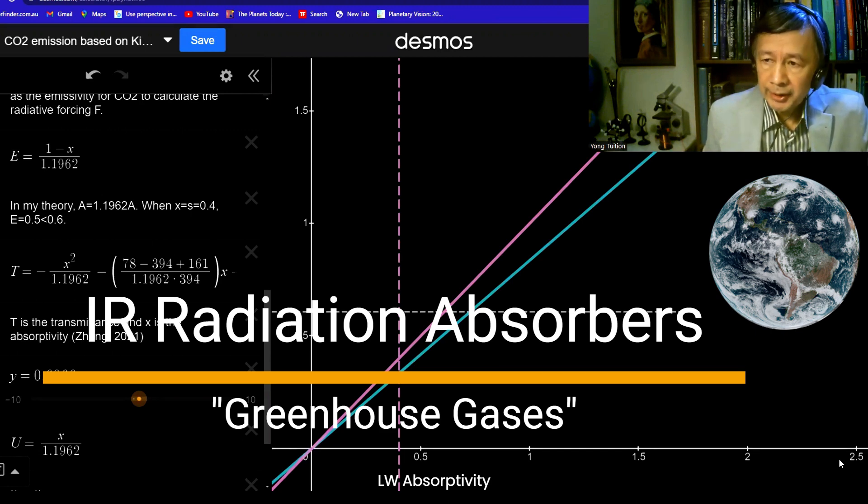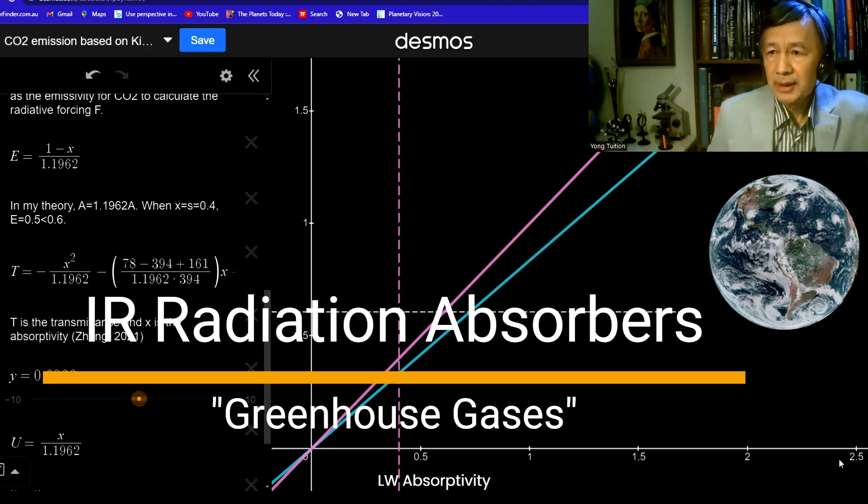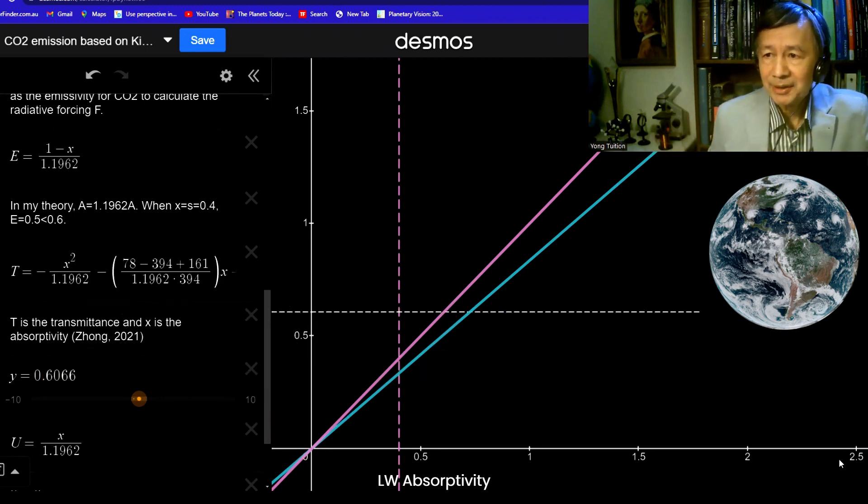But personally, I would prefer just to call it infrared radiation absorbers, because in my opinion, the term greenhouse is quite misleading, because our atmosphere has nothing to do with the greenhouse in your backyard, as I mentioned before.